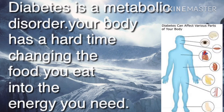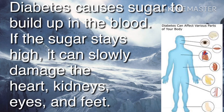What is diabetes? Diabetes is a metabolic disorder — your body has a hard time changing the food you eat into the energy you need. Diabetes causes sugar to build up in the blood. If the sugar stays high, it can slowly damage the heart, kidneys, eyes, feet, and other parts.